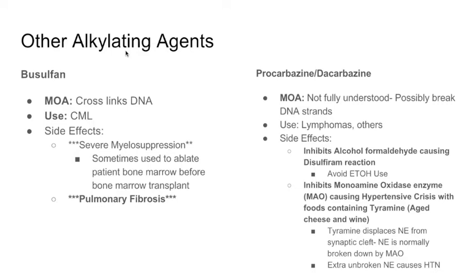Busulfan also cross-links DNA and is used for CML, though that's not super high yield. More importantly, it causes severe myelosuppression — severe enough to wipe out bone marrow — so it's used in bone marrow transplant patients to eliminate existing marrow and prevent graft-versus-host disease. The second notable side effect is pulmonary fibrosis. Remember the drugs that cause pulmonary fibrosis: bleomycin, methotrexate, and busulfan.